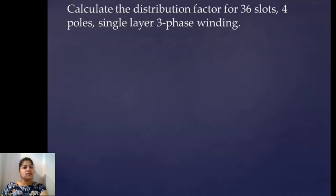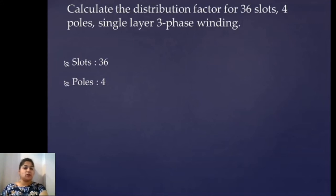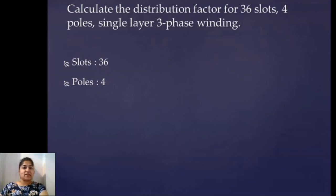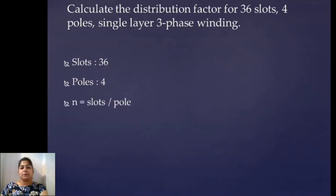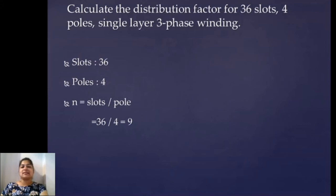In this problem we have 36 slots, 4 poles, and the winding is 3-phase. It is important to know whether it is single-phase or 3-phase winding. The distribution factor kd is given by sine of m·beta/2 divided by m·sine of beta/2. We will need the values of m and beta. First we find N — slots per pole: 36 divided by 4 gives N as 9.